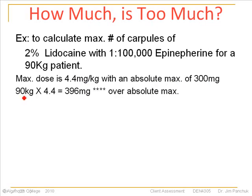So for our 90 kg patient, if we use the 4.4 mg per kg, that would give us a maximum dose of 396 mg. But that would be over our absolute maximum of 300 mg, so 300 mg is the number we have to base our calculations on. The most anesthetic we can give the client is a total of 300 mg of lidocaine.